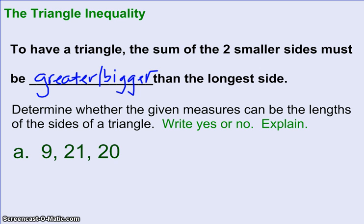So you'll be asked to determine whether the given measures can be the lengths of the sides of a triangle. You'll be asked to write yes or no and to explain. So basically, we just want you to show your work a little bit. So it says the sum of the two smaller sides. So in this example, the two smaller sides are 9 and 20. So when you do 9 plus 20, you get 29.